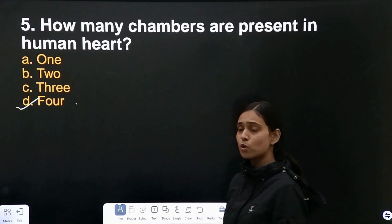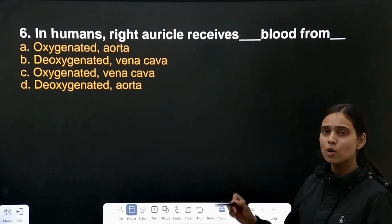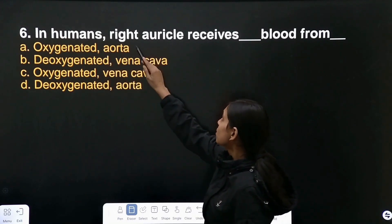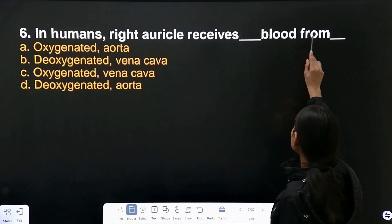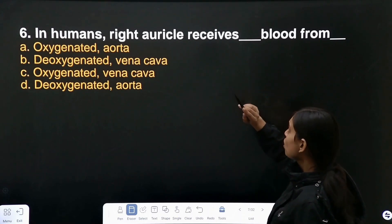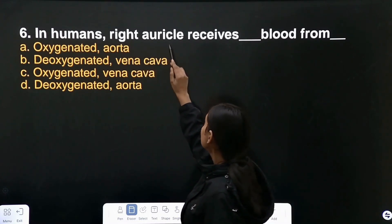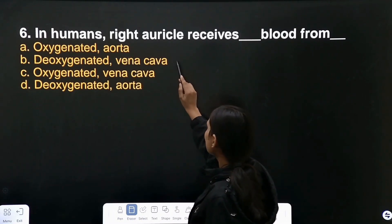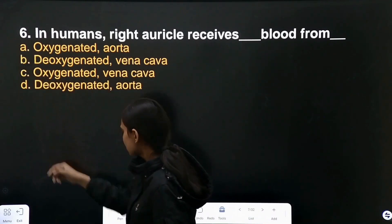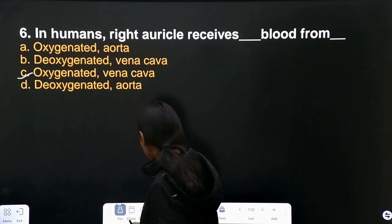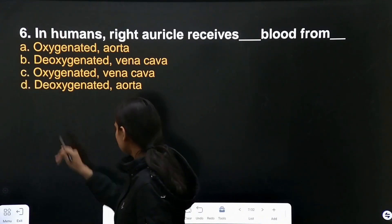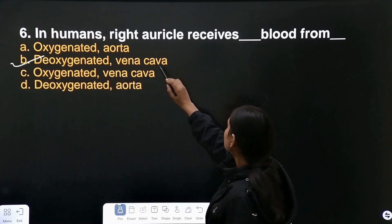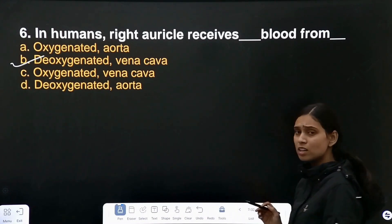Question number 6: in humans, the right auricle receives what type of blood from where? The right auricle receives deoxygenated blood from the vena cava. Deoxygenated blood is received from the vena cava.